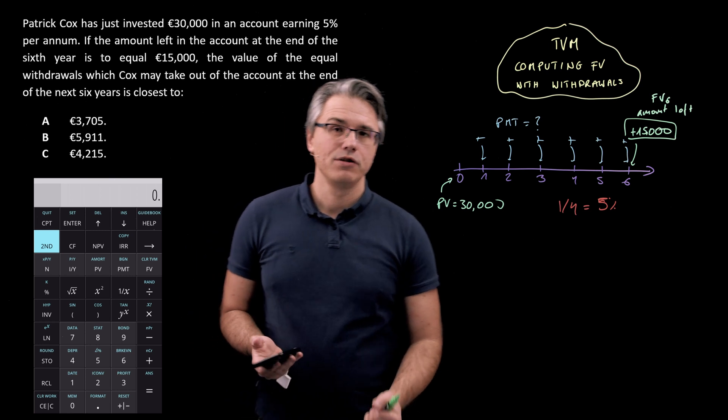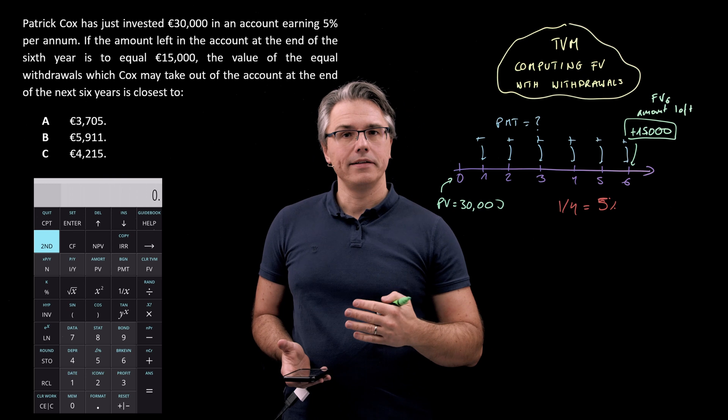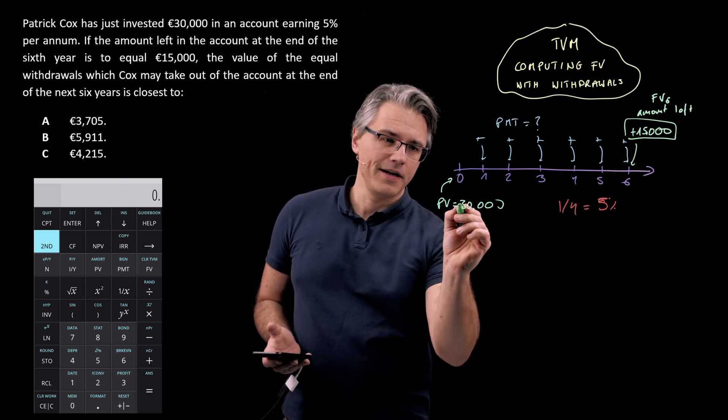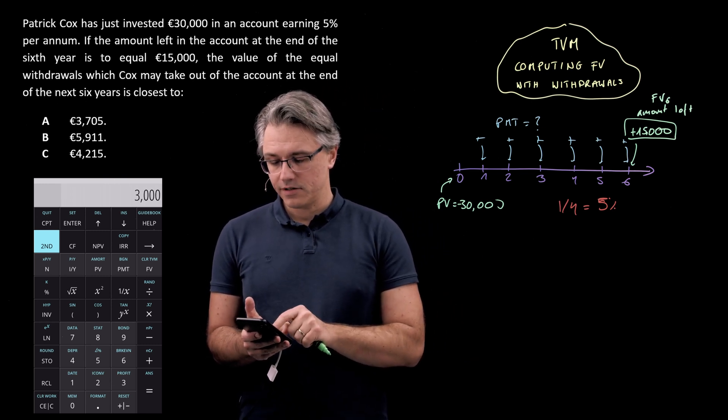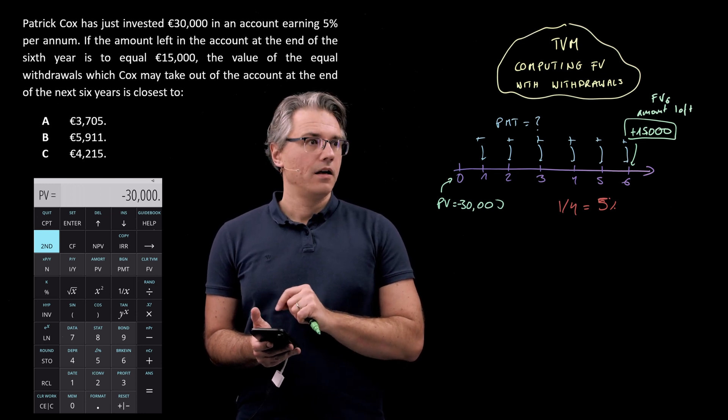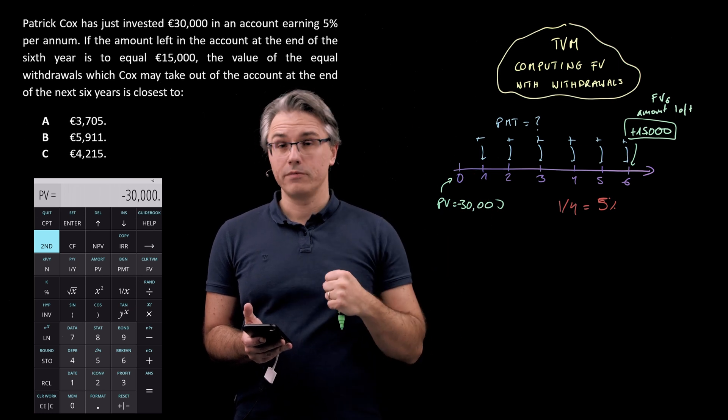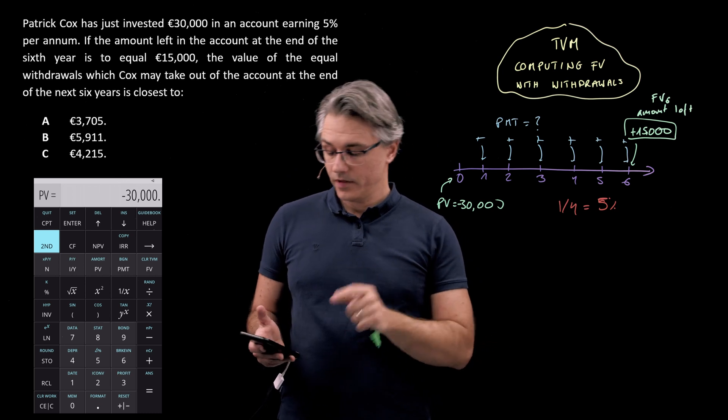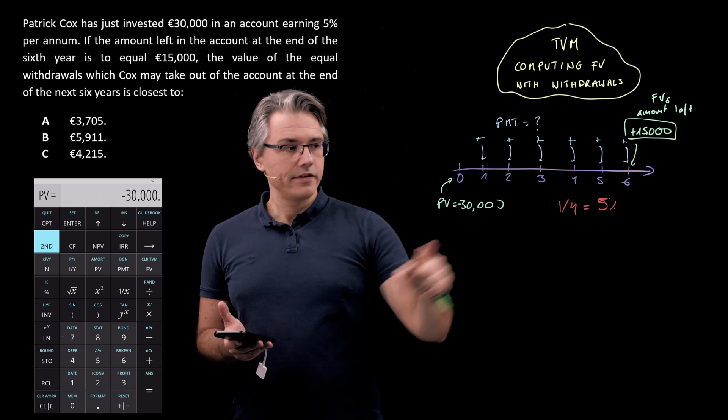Just one additional note. Remember that when you're working with PV and FV and PMT, make sure to distinguish between the inflows and outflows. So I'm going to make this PV a negative figure. So let me do this straight away: 30,000 followed by the plus-minus key, and now PV. And I'm going to have all the withdrawals from the account and the amount left in it as positive numbers. You could do it the other way around, but I find this more intuitive and I'm used to this method.